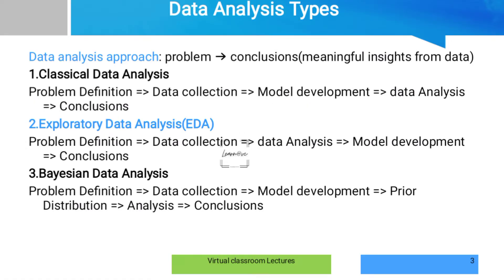Data analysis is very important in the data science process. There are different types of data analysis. Data analysis has three kinds: classical data analysis, exploratory data analysis, and Bayesian data analysis.